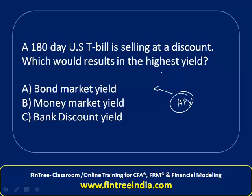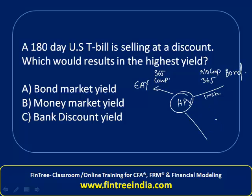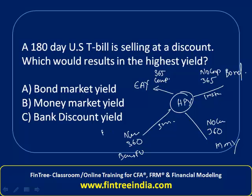When we make no mistake — using all 365 days with compounding — the yield we get is the effective annual yield. When we make the first mistake, no compounding but using 365 days, we get the bond market yield. When we make two mistakes — no compounding and using 360 days — we get money market yield. When we use all three mistakes — no compounding, 360 days, and keeping face value as the denominator — we get bank discount yield.